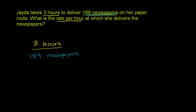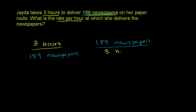We can really just flip this rate right here. If we were to flip it, we would have 189 newspapers for every three hours, which is really the same information — we're just flipping what's in the numerator and what's in the denominator.